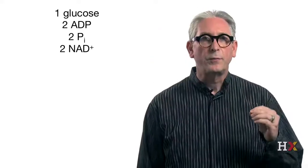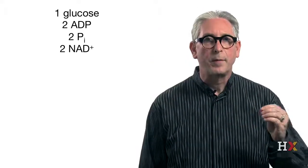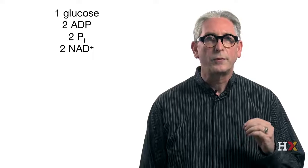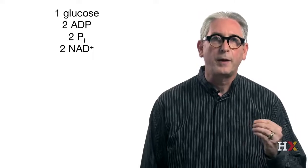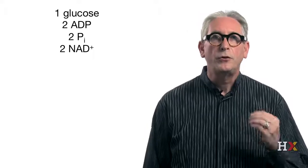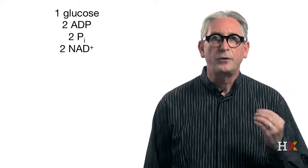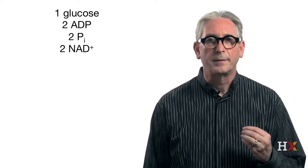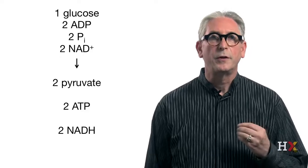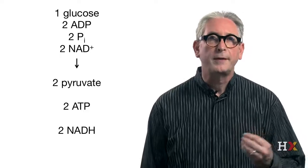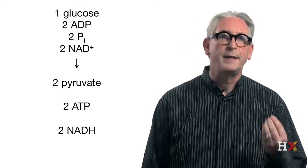In this video, we'll learn what happened to the byproducts of glycolysis. As you recall, if we start with one molecule of glucose, we also consume two molecules of ADP, two molecules of inorganic phosphate, and two molecules of NAD+. And we produce two pyruvates, two ATP, and two NADH.